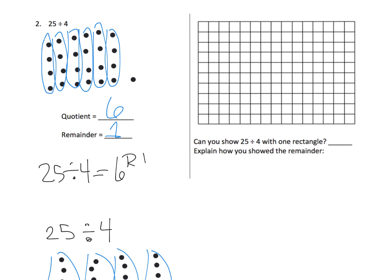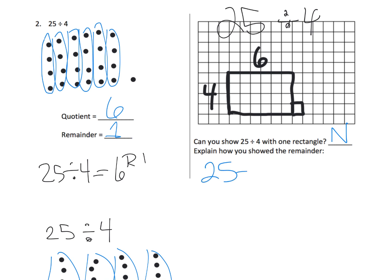So how would this look in the area model? Well, 25 divided by 4 — because we're dividing by 4, that means the height of our rectangle is going to be 4. We go over 6 units in width, that uses 24 square units, and we have that one little square unit left over. So 25 divided by 4 is 6 with one remainder. Can we do this using one rectangle? Nope.